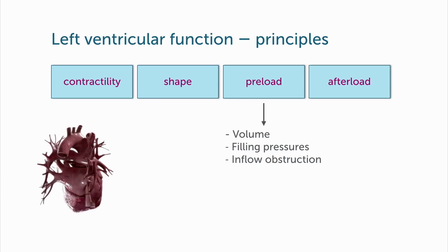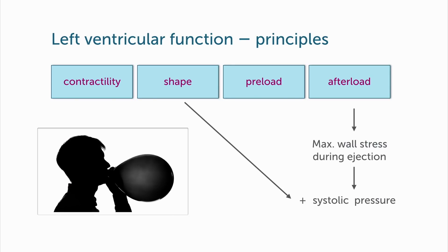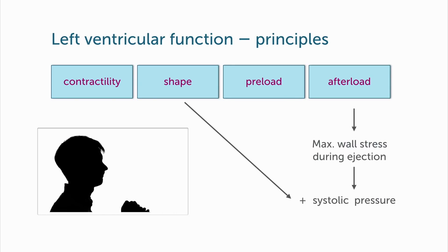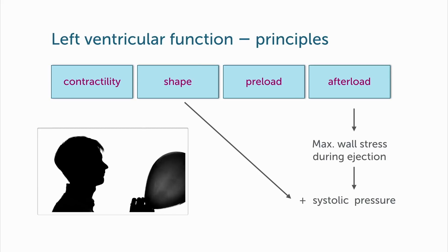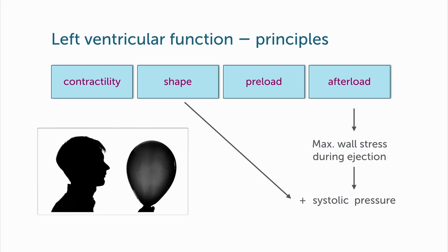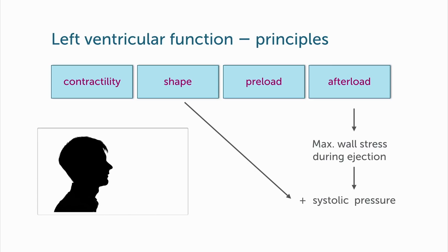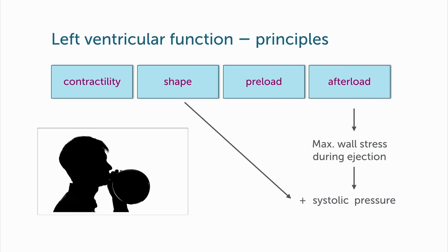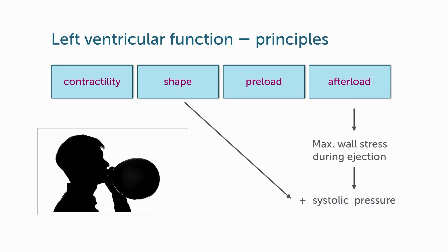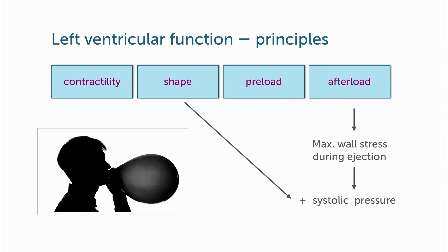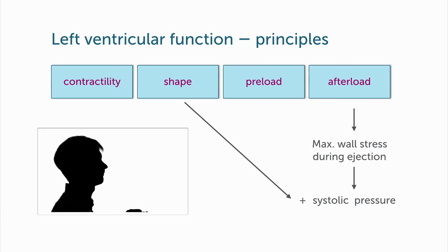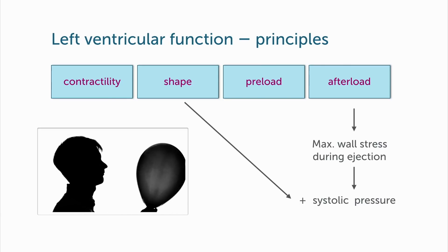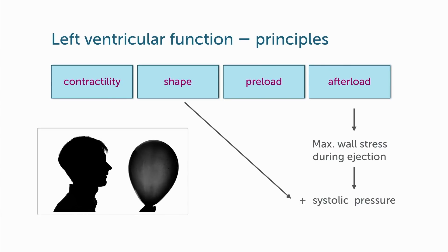Finally, afterload. Afterload is basically the wall stress of the left ventricle during the time of ejection. This is influenced by a number of factors, first of all by the size of the ventricle. Take a look at this man who is blowing up a balloon. You can appreciate that at the initial phases, when it is still small, the wall stress is relatively high. Then once it reaches a certain size, the wall stress gets less again. So size plays an important role.